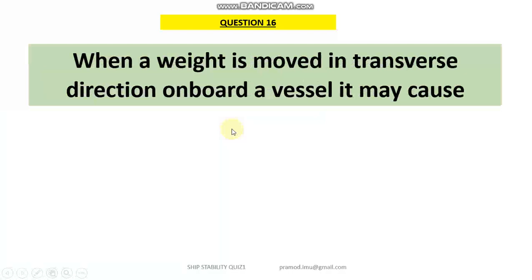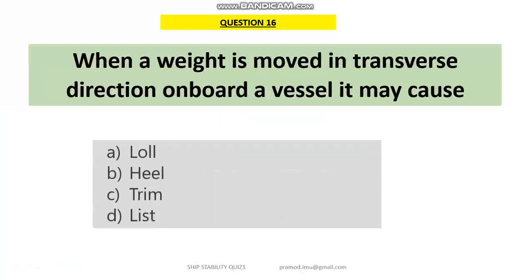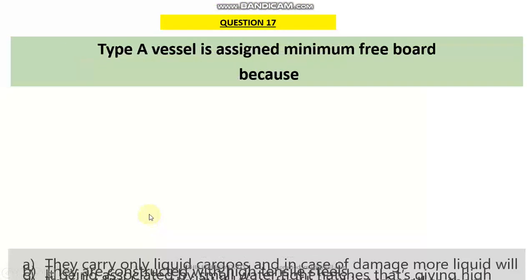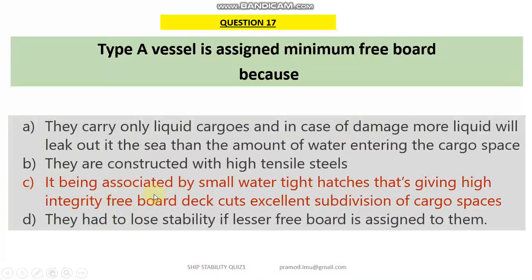Quiz number 16: when a weight is moved in a transverse direction on board a vessel it may cause a list. The vessel will list — please don't get confused — because the list has developed because of an internal reason: a weight on board the vessel has moved. Quiz number 17: the Type A vessel is assigned minimum freeboard because — option C — it has small watertight hatches or openings which give high integrity to the freeboard deck, resulting in excellent subdivision of cargo spaces as seen in tankers.